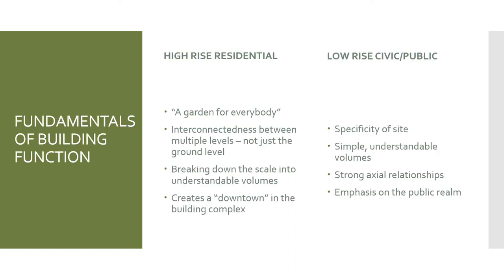Through this analysis, Safdie's fundamentals of building function can be categorized into two categories: high-rise residential and low-rise civic and public buildings. In his high-rise residential buildings he employs the idea of a garden for everybody, giving residents direct access to outdoor space. He also employs interconnectedness between multiple levels — not just the ground level — creating a new form of urbanism. He breaks down the building's scale into understandable volumes so people don't feel overwhelmed, and through all this Safdie creates a building complex in which the connectedness of buildings creates a community.